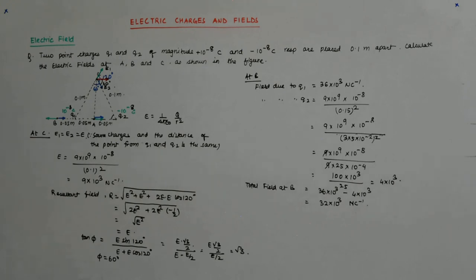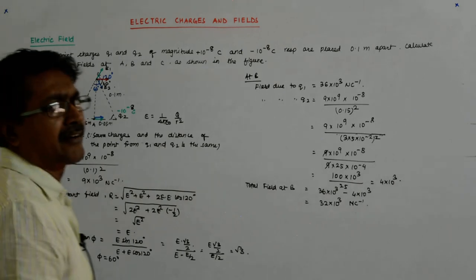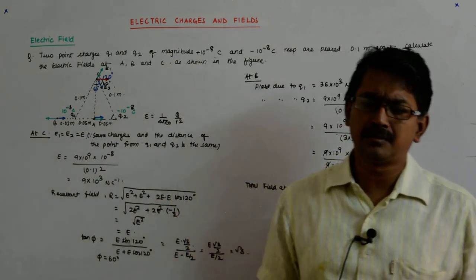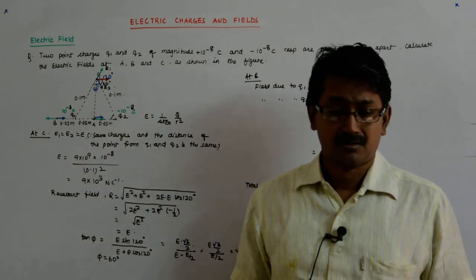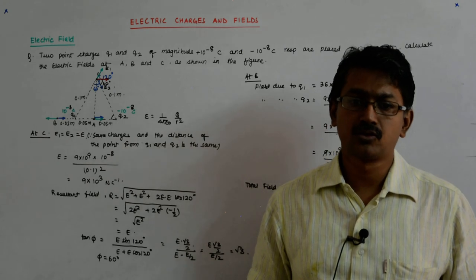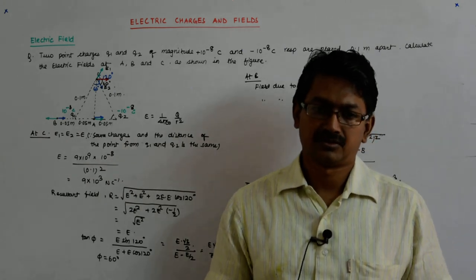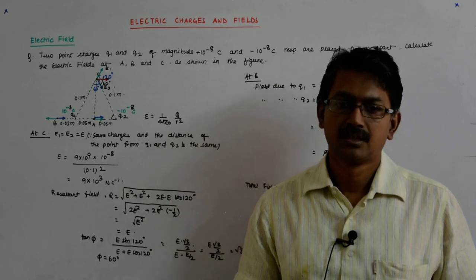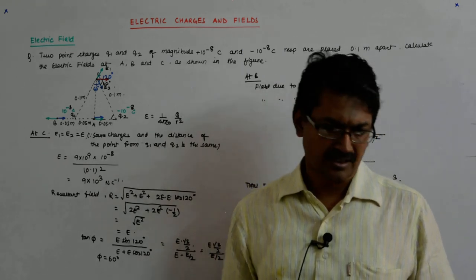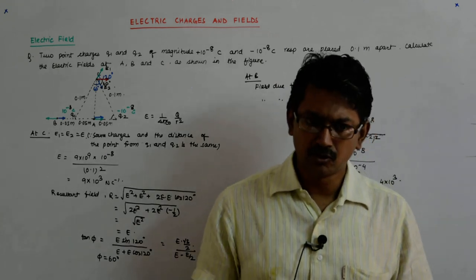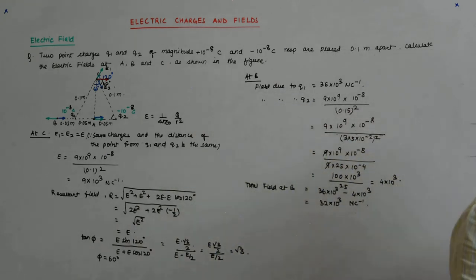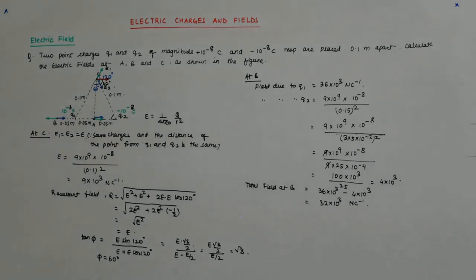Since the resultant makes 60 degrees with E1, and the geometry of the equilateral triangle means the direction is parallel to the line joining Q1 and Q2, the resultant field at C points horizontally to the right. We could also use the rigorous vector approach in IJK notation, which is always the better proposition and is appreciated in an examination setting.